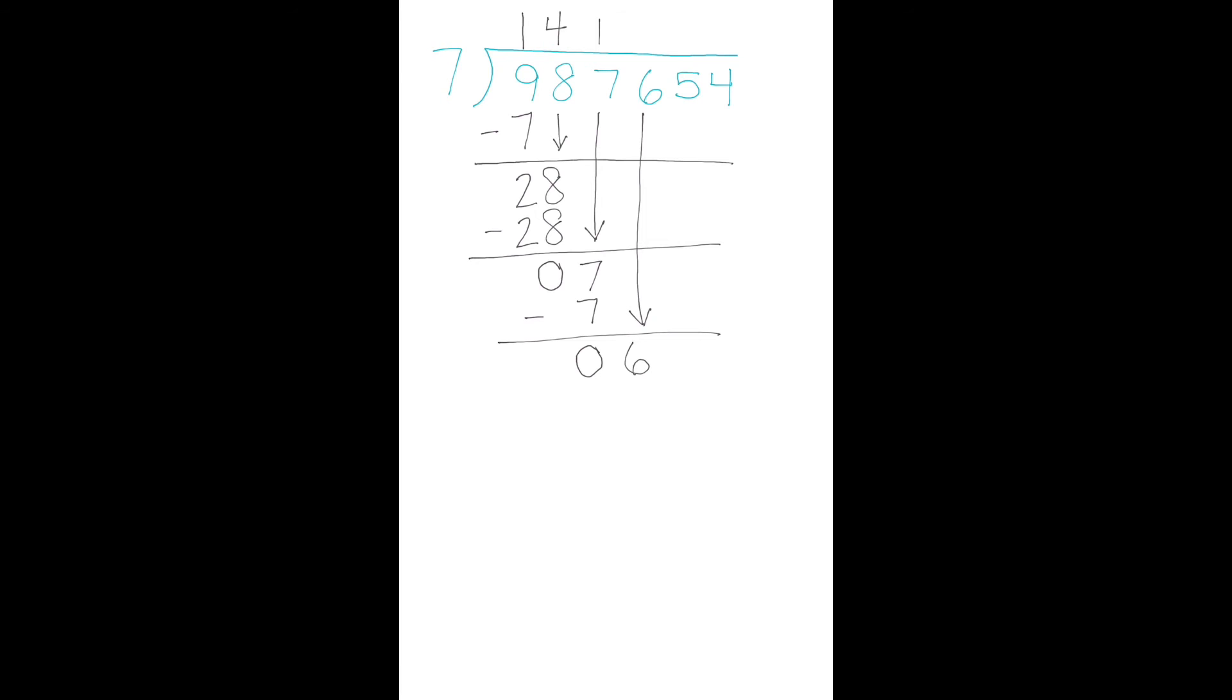When we try to do 6 divided by 7, we know that 6 is too small. If we have 6 candies and want to share them between 7 friends, we know that each person will not be able to receive a candy. So 6 divided by 7 equals 0, 0 times 7 equals 0, subtract, 6 minus 0 is still 6, and bring down.